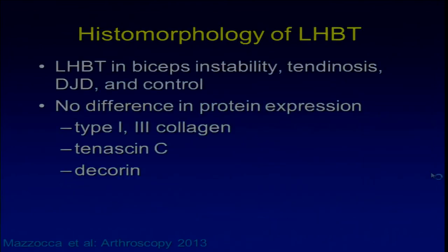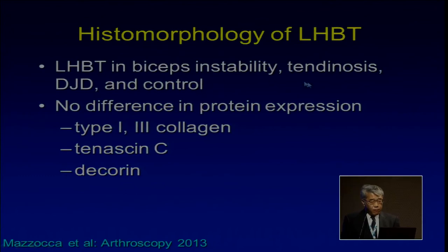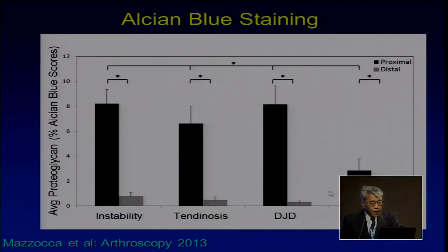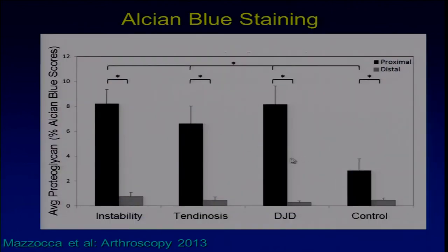So what is tendinopathy? Gus Mazaka looked at the histomorphology of the long head of the biceps in three pathologies — instability, tendinosis, and degenerative joint disease — versus controls. There was no difference in protein expression such as type 1 or 3 collagen, tenascin-C, or decorin. Using alcian blue staining, which represents proteoglycan concentration indicating tendon degeneration, the proximal part of the tendon showed far more staining than the distal part, meaning it is more degenerated.